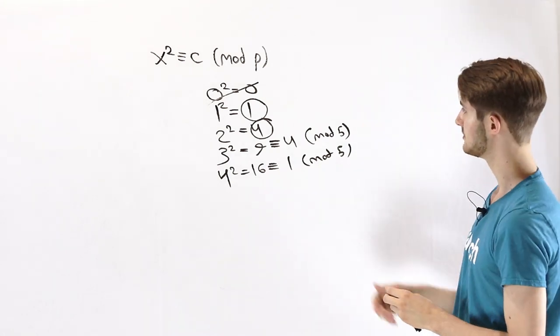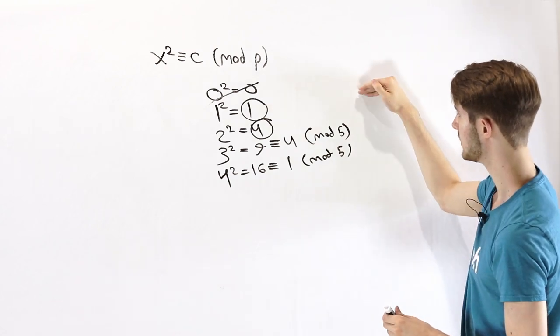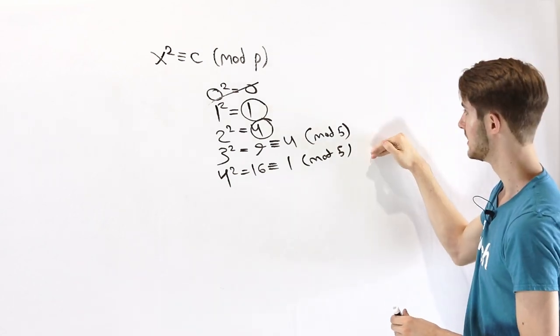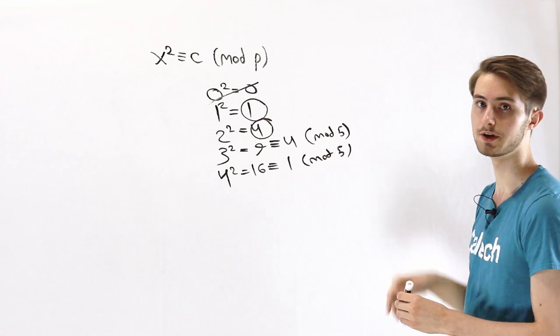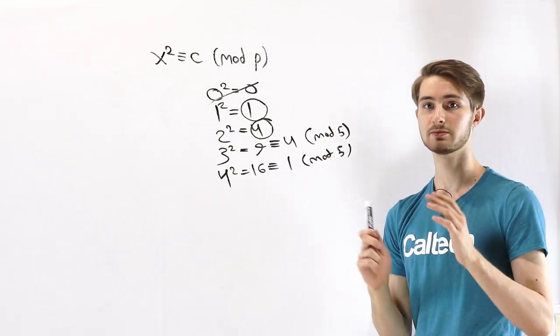You might notice that this table seems kind of symmetric. We have 1 at the beginning and the end, and then we have 4 two times in the middle. And that actually comes from a general fact.